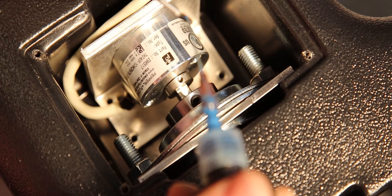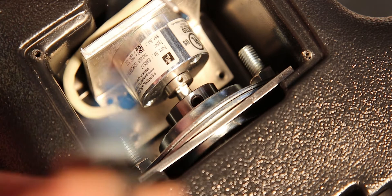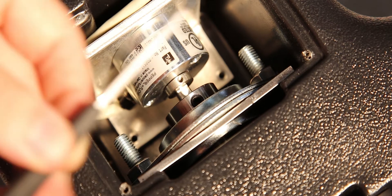Align the encoder sleeve so that a set screw thread sits above the flattened part of the axle protrusion. Push the encoder flat against the axle and fasten the two set screws with a drop of blue Loctite.